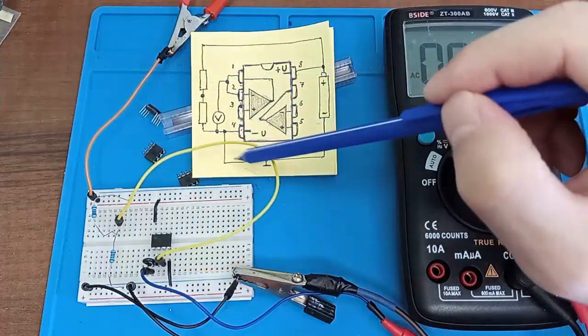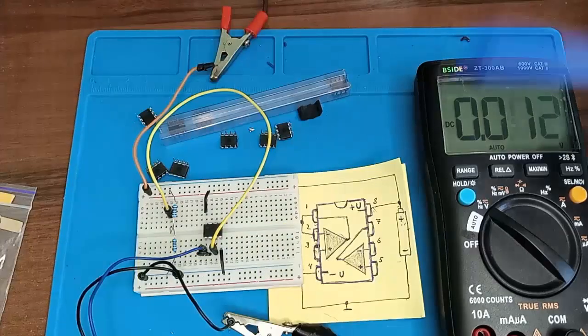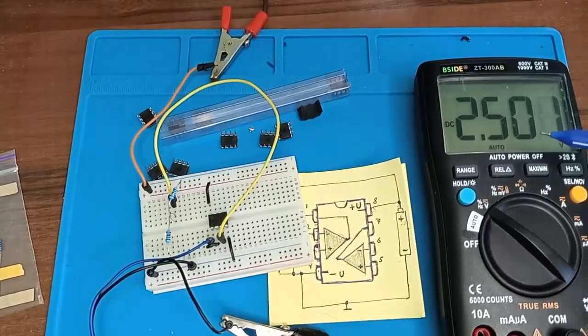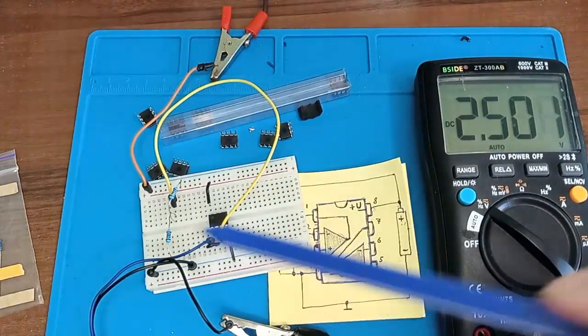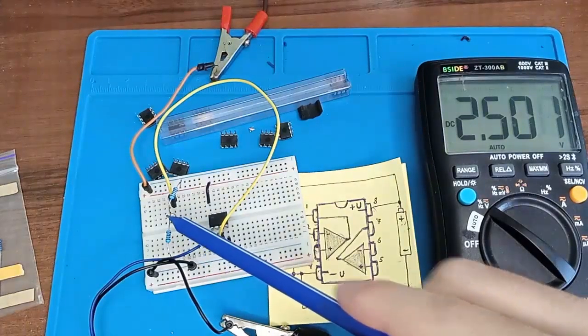Then we should also get 2.5 volts at the output of the measuring device. I connect the power supply. Let's see. The multimeter reads 2.5 volts. This indicates that the op amp is working. What we have at the central point of two connected resistors is also at the output.